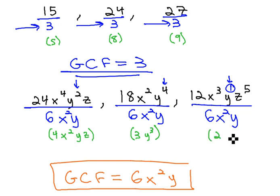And finally, 12 over 6 is 2. X cubed over x squared is x. The y's divide out, and we have z to the fifth. They all reduce without any fractions left over. No factors in common anymore. Our greatest common factor is just 6x squared y.